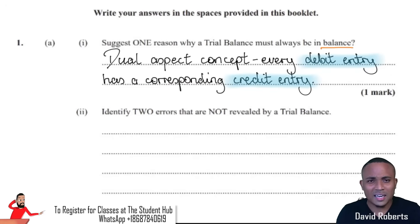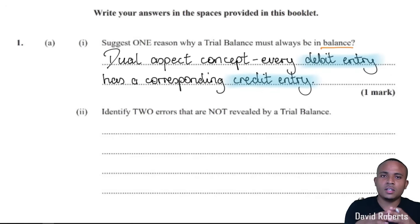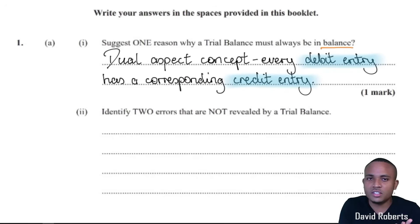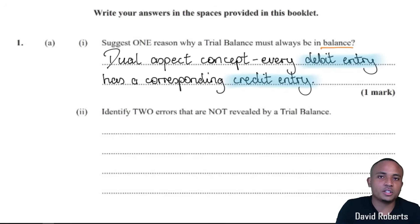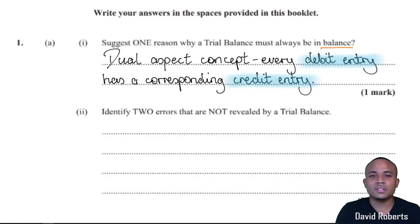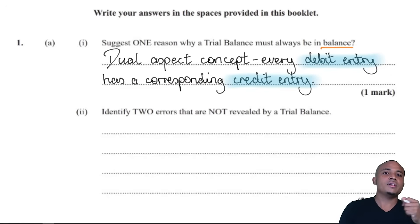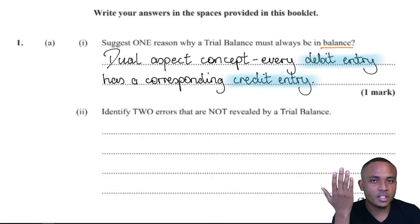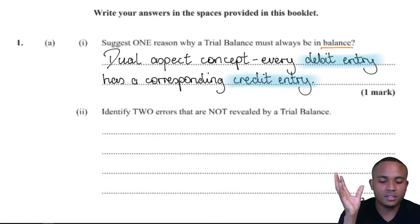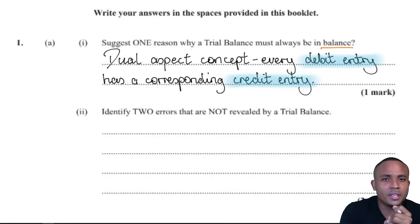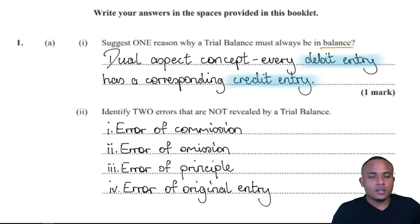Part two: identify two errors that are not revealed in a trial balance. This comes from the control system section of the syllabus. There are different errors that a trial balance may have — some errors you will be able to pick up, for example if you enter 200 on the debit side and 100 on the credit side. But some errors occur in such a way that you would not be able to see them.